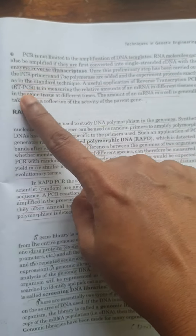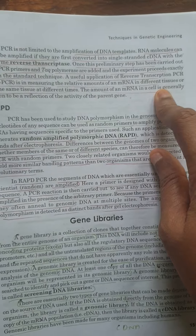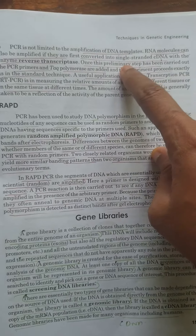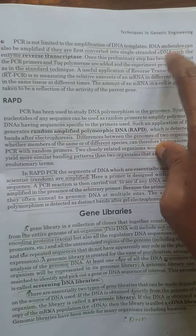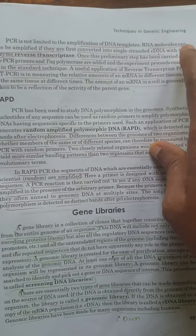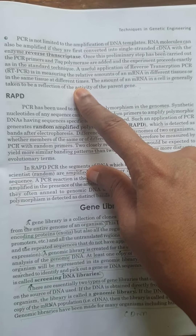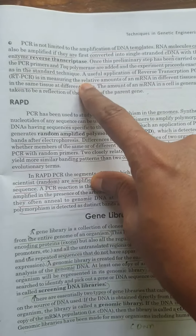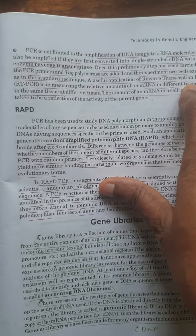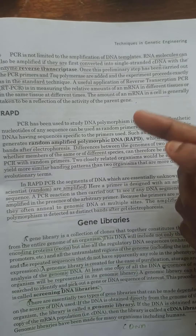In RT-PCR, or real-time PCR, what we are doing is first the mRNA will be amplified to single-stranded cDNA, then the cDNA will be amplified to the amplified DNA. From that we can do the electrophoresis. A useful application of reverse transcriptase is that we can find out whether the gene is active or not.